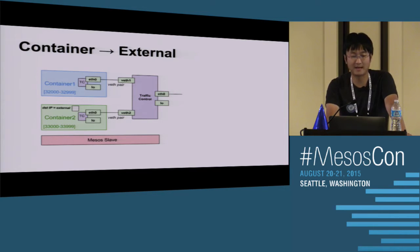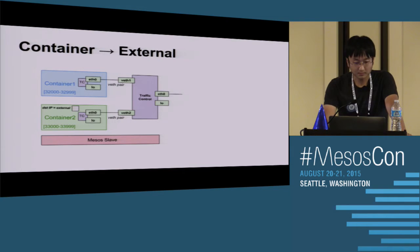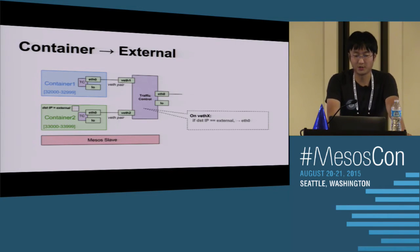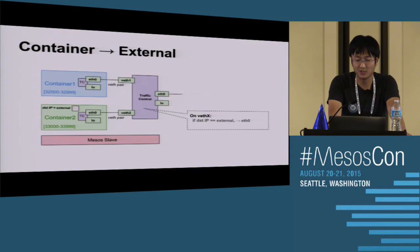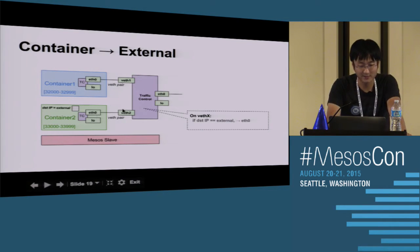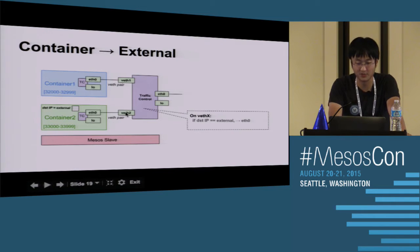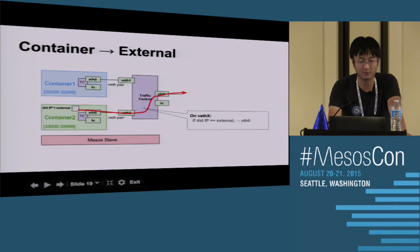For container-to-external traffic: say you have a package you want to send out from container two with an external destination IP. We have a TC rule on veth2 saying if the destination IP is external, that package will be redirected to the host eth0. So the package flows from inside the container through eth0, through the pipe, through veth2, and is then redirected to the host eth0 to go out.